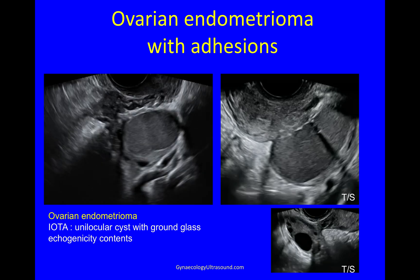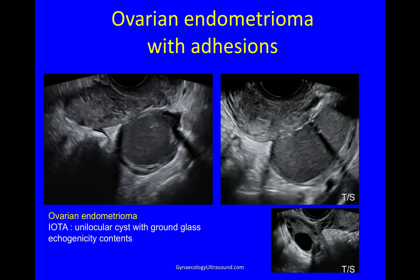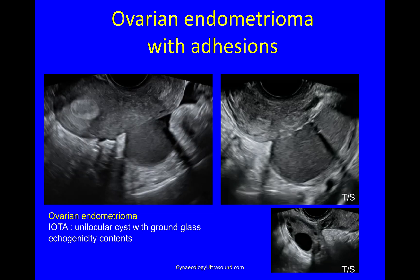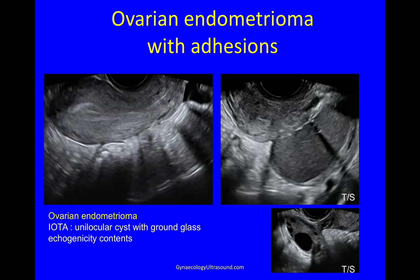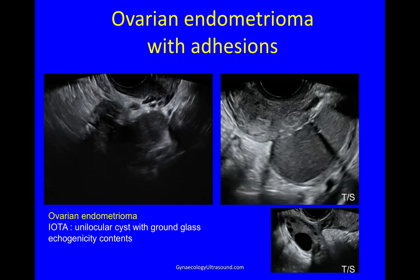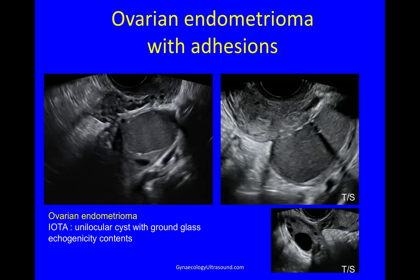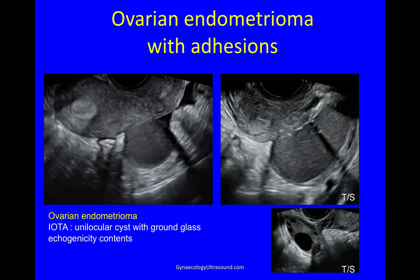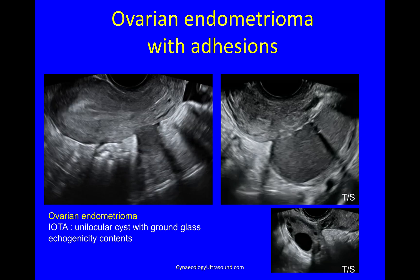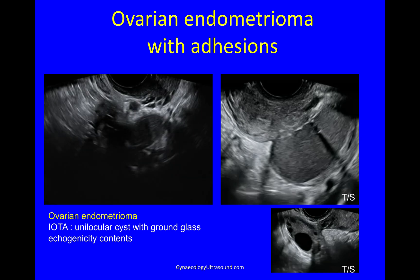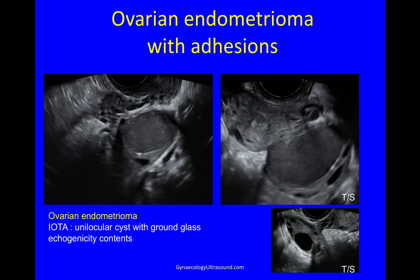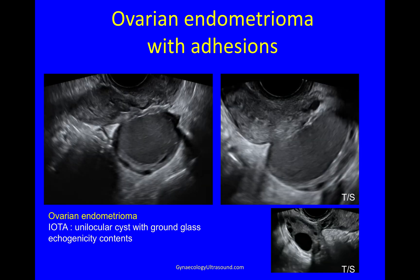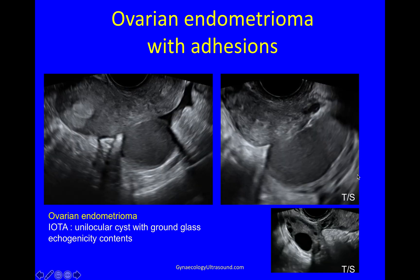An ovarian endometrioma would be a unilocular cyst with ground glass echogenicity contents and often some shadowing, minor vascularity. You can see that this ovary is adherent to the back of the cervix.